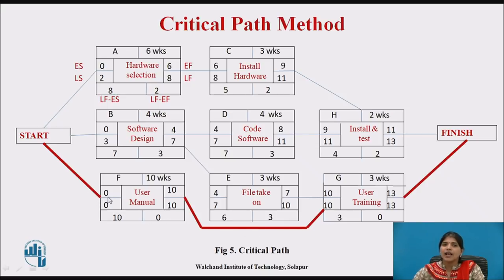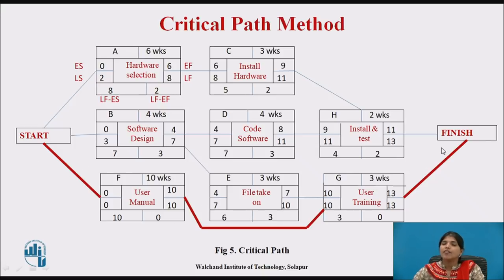Here we can see that the finish dates and start dates are the same — for example, 0 and 0, and 10 and 10 — with a float of 0, confirming these are critical activities shown in the red bold line. Any activities on the critical path are critical activities; a delay to any of them delays the whole project.